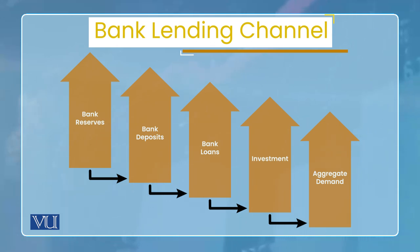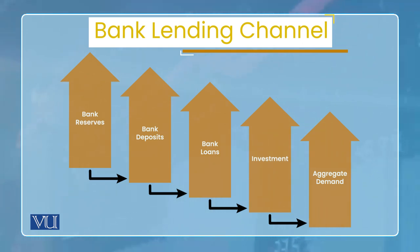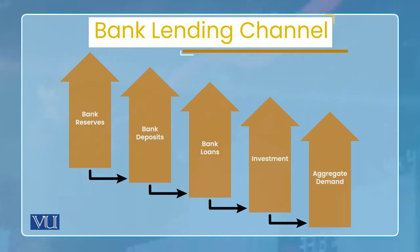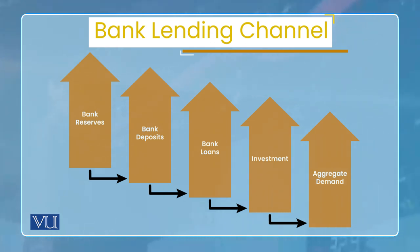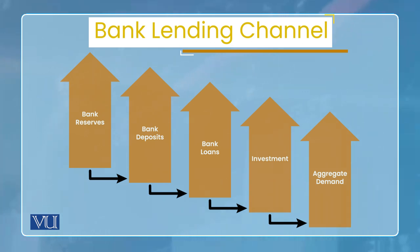یعنی کہ monetary policy bank reserves change کرے - اور ہم یہاں پر specifically assume کر رہے ہیں کہ bank reserves بڑھا دے۔ Bank reserves بڑھانے کا یہ طریقہ ہو سکتا ہے کہ required reserve ratio کم کر دے - for example، تو جو bank کے reserves ہیں، excess والے وہ بڑھ جائیں گے۔ آپ کو پتا ہے کہ lending جو ہے وہ excess reserves کے ذریعے ہوتی ہے - تو ہم یہاں پر assume کر رہے ہیں کہ bank کے excess reserves increase ہوں۔ تو اس کا مطلب ہے bank کے deposits increase ہو گئے - اب جب آپ اپنی economy میں banks کے deposits increase کریں، تو banks چونکہ lending میں specialized ہیں اور اب ان کے پاس deposits بھی آ گئے ہیں، تو bank کے loans increase ہو جائیں گے۔ Bank کے loans increase ہونے کا مطلب یہ ہے کہ loan لے کے لوگ investment کریں گے، تو investment increase ہو جائے گی، اور investment increase ہونے سے aggregate demand increase ہو جائے گی۔